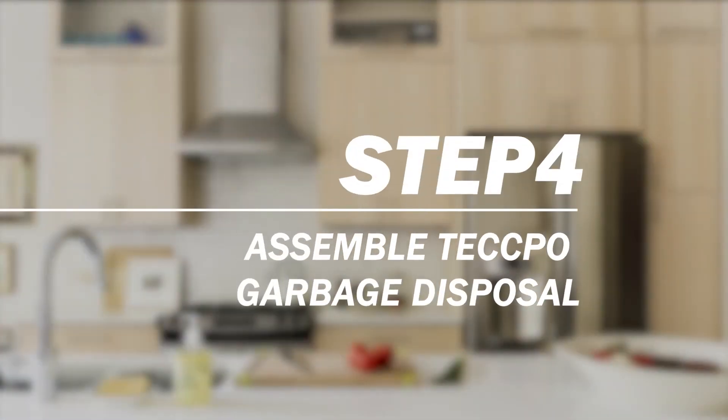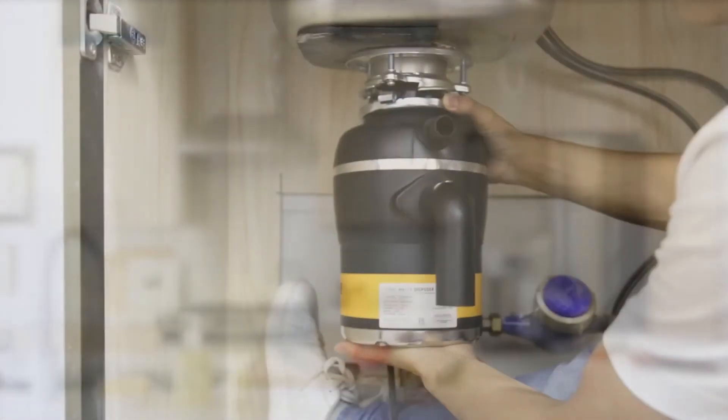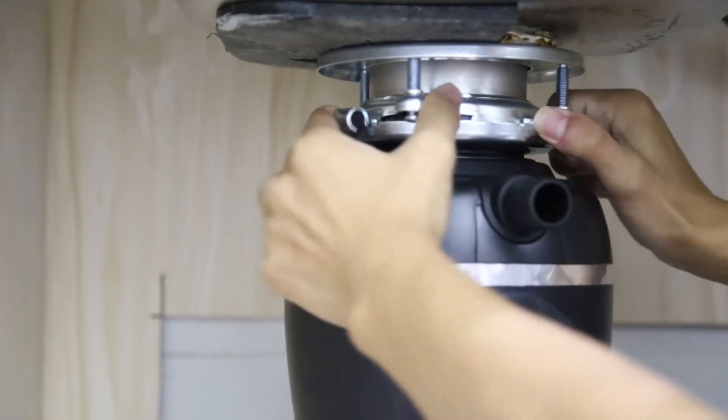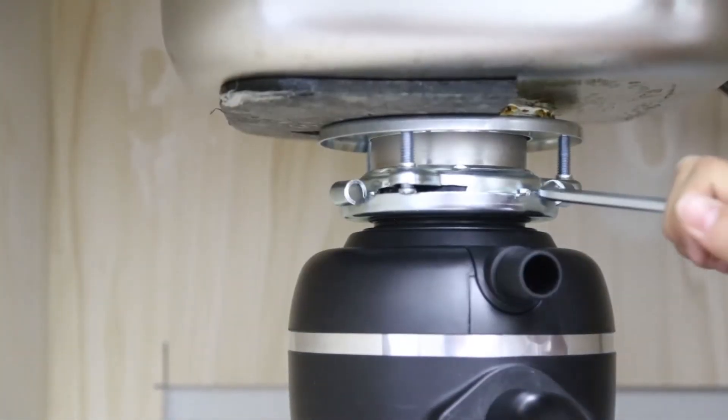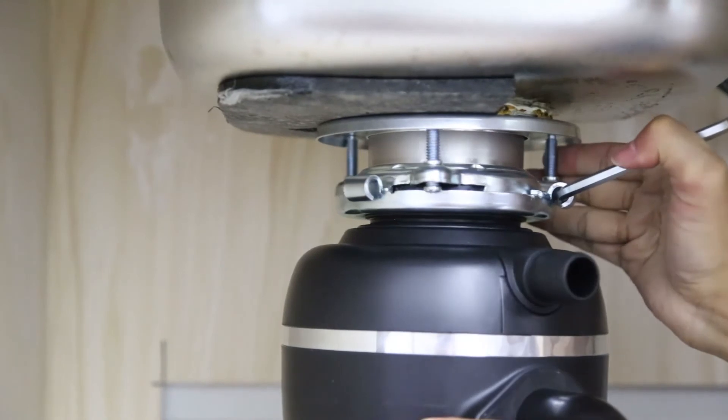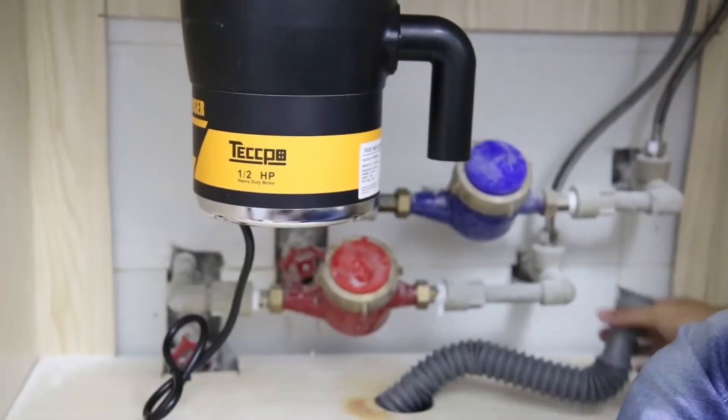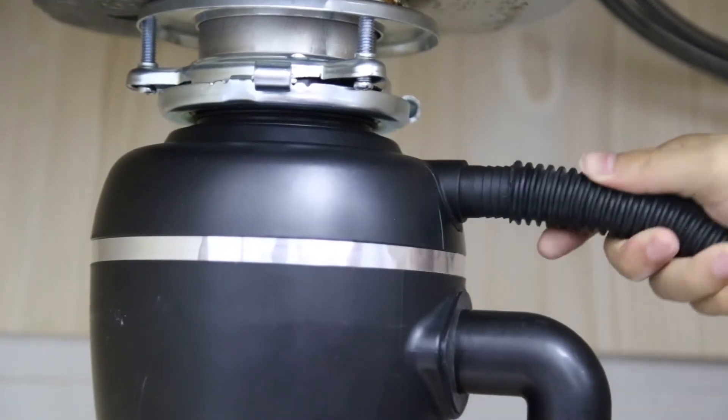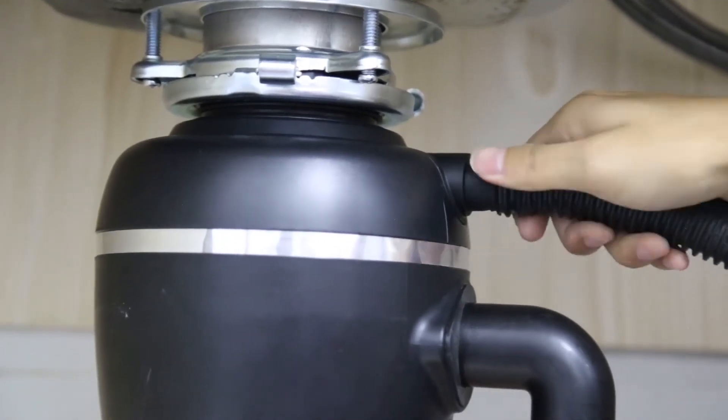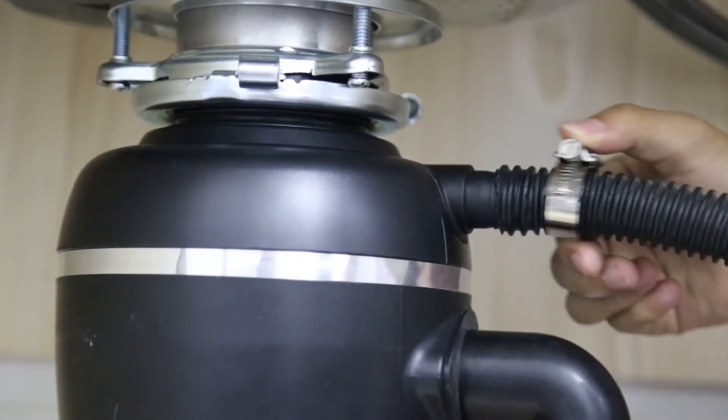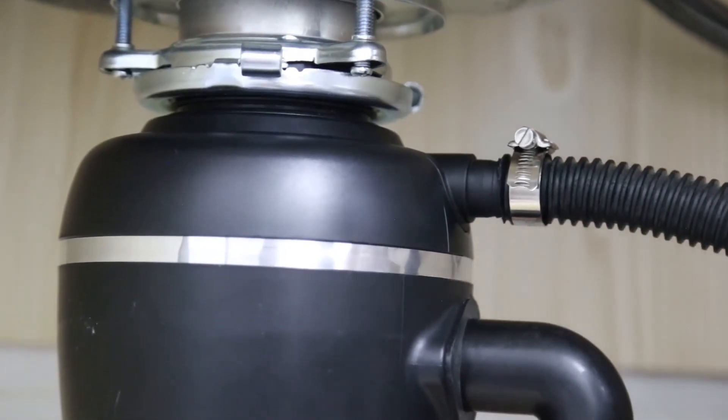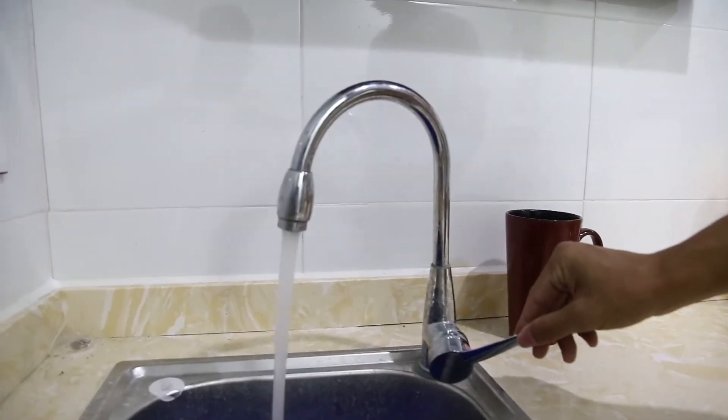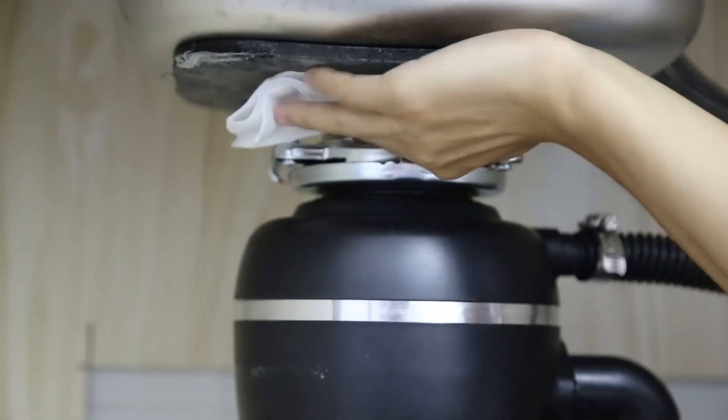Step 4: Assemble the garbage disposal. Put on the garbage disposal and use the screwdriver to turn it tightly. And then connect the discharge pipe to the garbage disposal. If there is a dishwasher, connect the dishwasher drain hose. A 1-inch outer diameter hose can be directly inserted to the disposal. Then run water and check for any leaks.